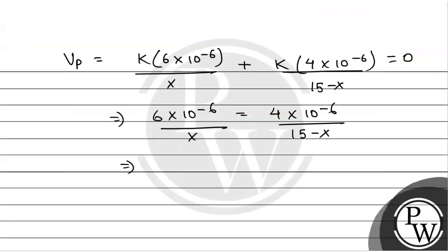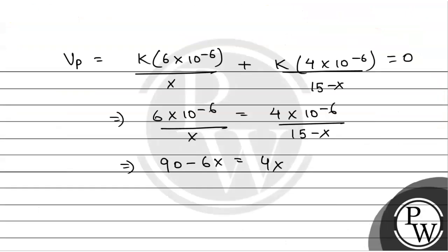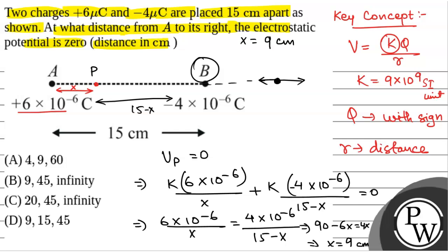So we have 90 − 6X = 4X giving X = 45 centimetres for the external point, confirming our two values of X: 9 centimetres and 45 centimetres. We also know that the electric potential at infinity is 0. Therefore, the correct answer includes 9 cm, 45 cm, and infinity.